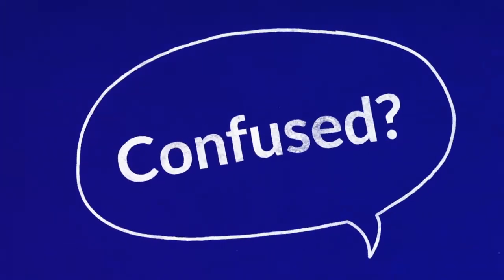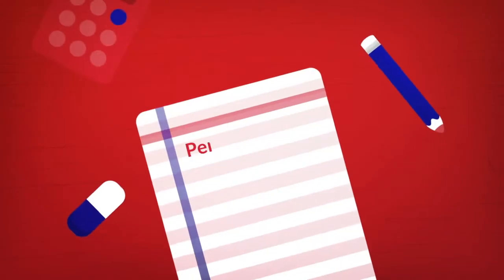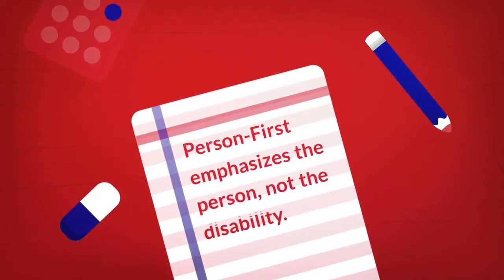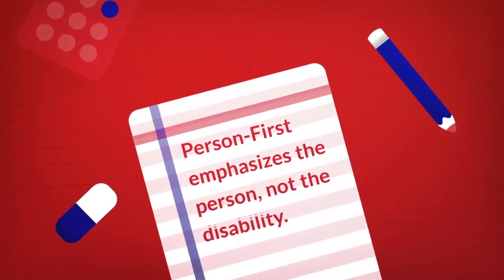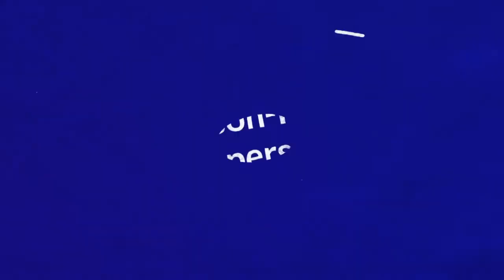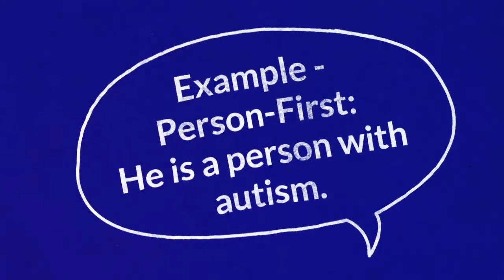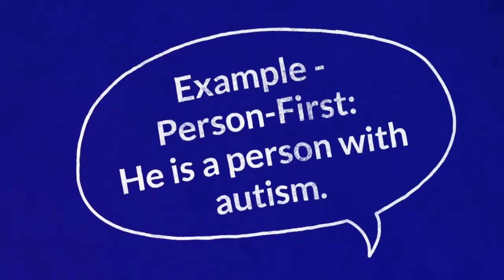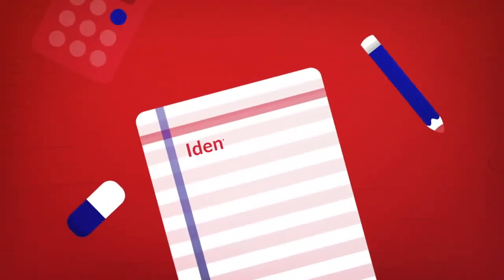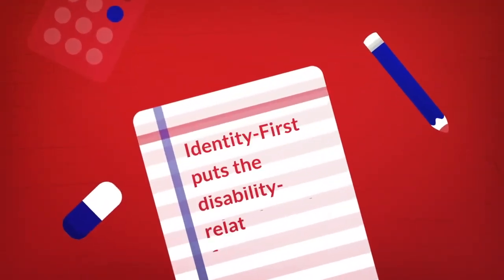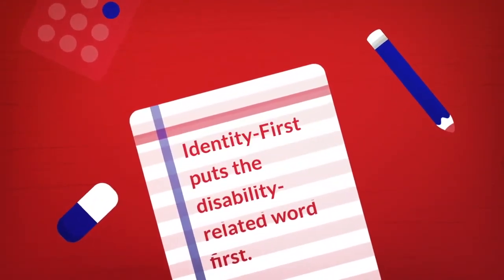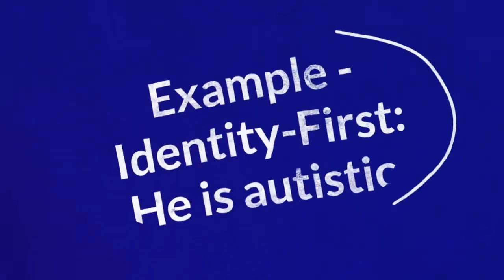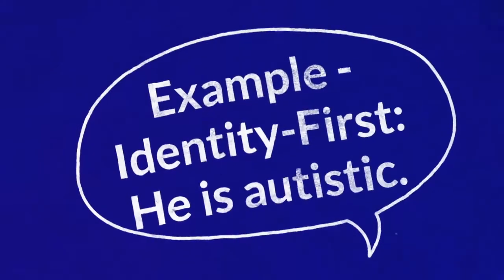Confused? Person-first emphasizes the person, not the disability. Example — person-first: "he is a person with autism." Identity-first puts the disability-related word first. Example — identity-first: "he is autistic."